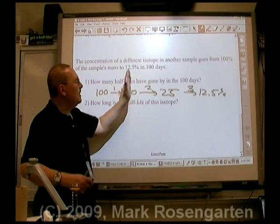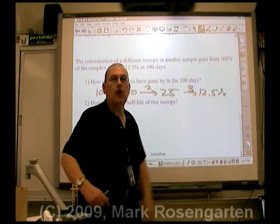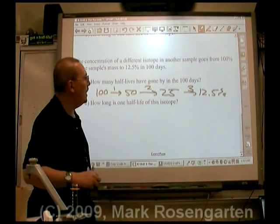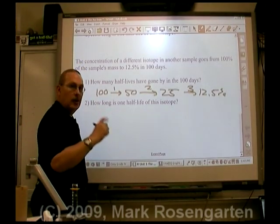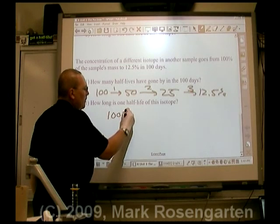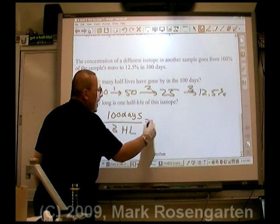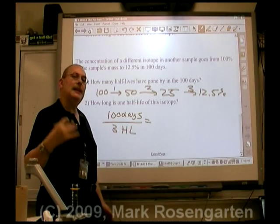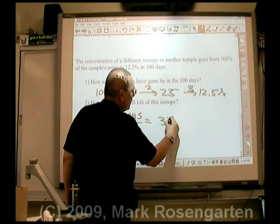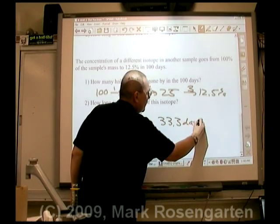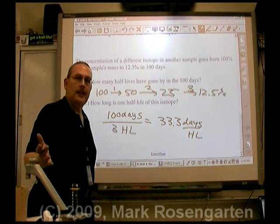Our isotope had to be cut in half three times before we got to the target of 12.5%. So if three half-lives took place in 100 days, you take 100 days divided by three half-lives, and that tells you how many days per half-life — roughly 33.3 days per half-life. And that's how long a half-life is.